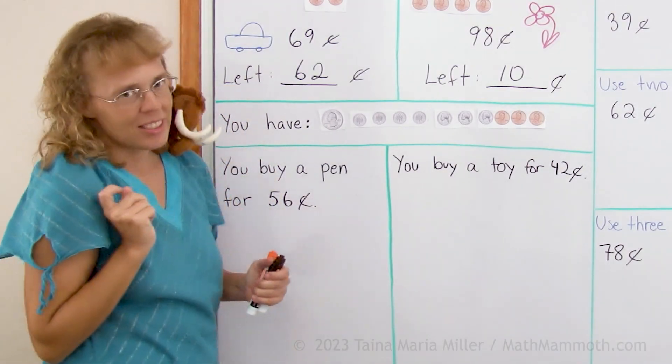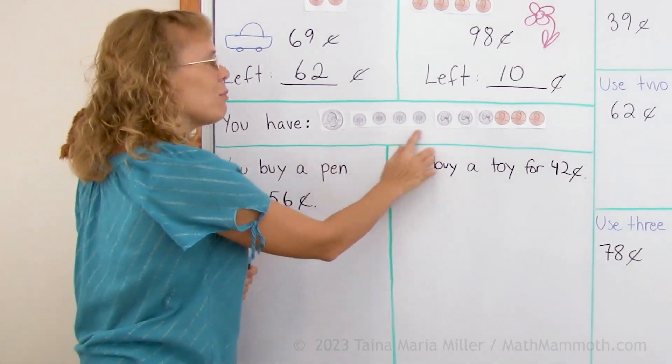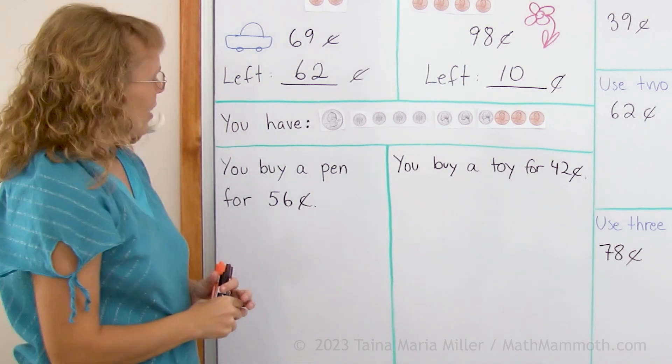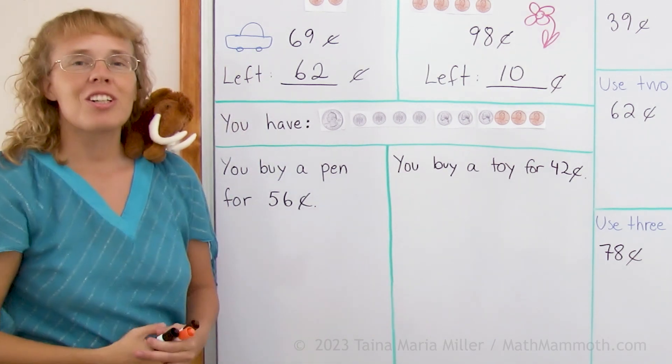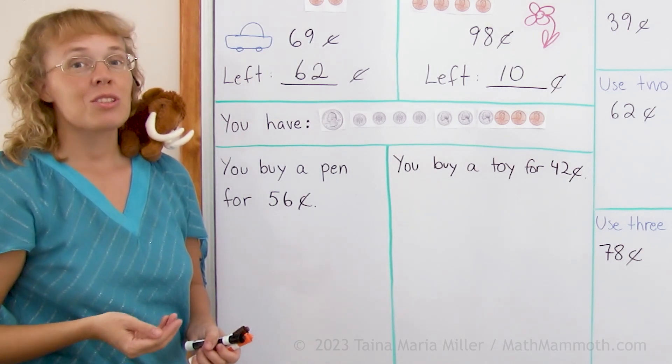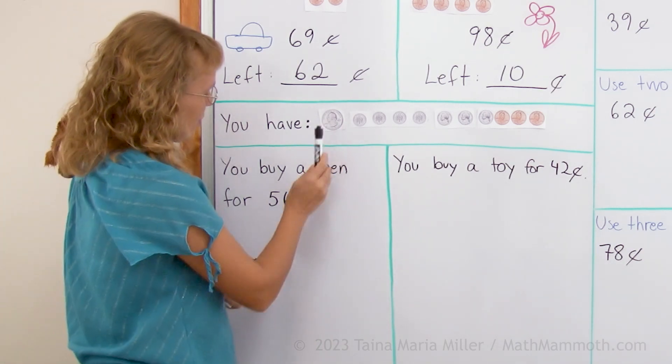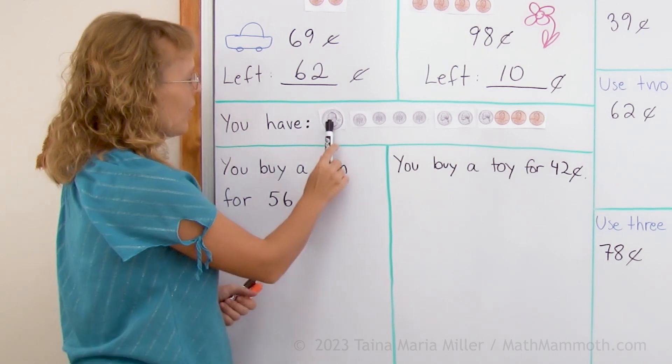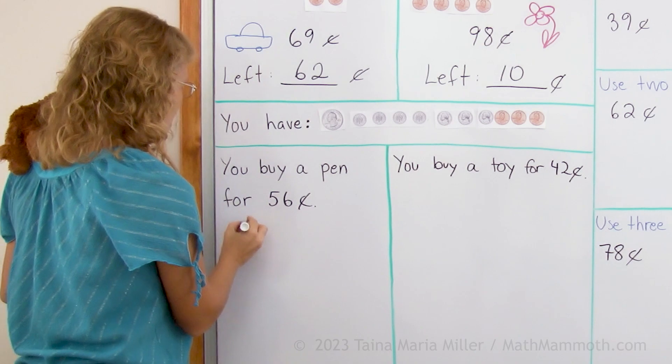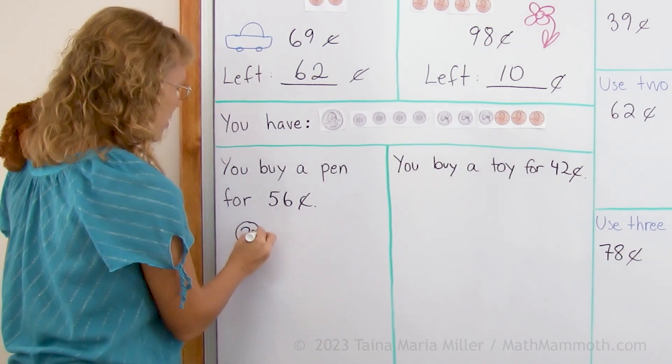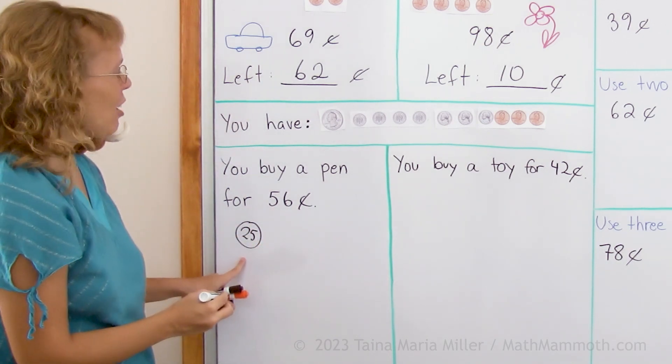Now this is a little different exercise. Here is again what you have in your purse. And you buy a pen for 56 cents. Here we're just going to draw the coins that you're going to use to buy it. 56 cents. I would use this, this is 25, a quarter is 25. And this is my quarter, 25 cents. That's how I draw it.